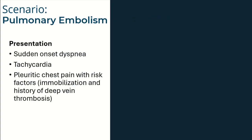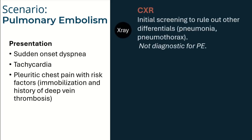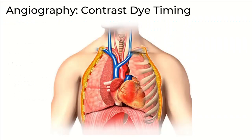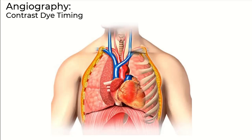Let's use a pulmonary embolism as an example. Here are some basic symptoms a patient would present with. Chest X-ray is done first as a screening tool. Further evaluation will be CT angiography. For angiography, dye has to be used to highlight the vasculature. The dye is injected into a vein in the arm and enters the thorax via the subclavian vein. Depending on what you want to look at, imaging can be taken any time along the vascular track that the dye bolus is traveling.